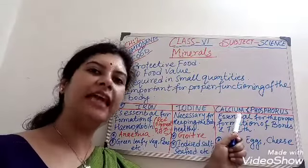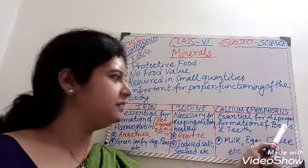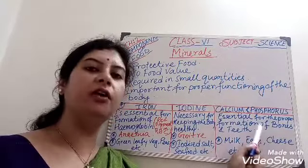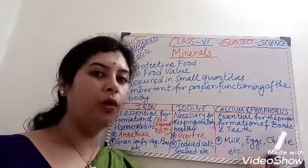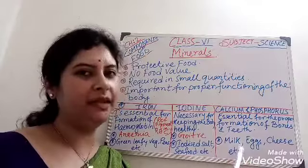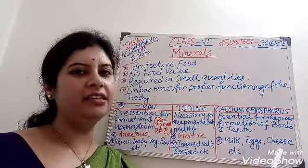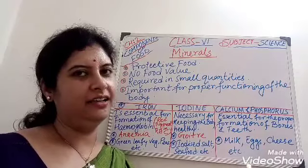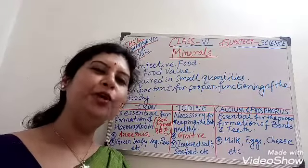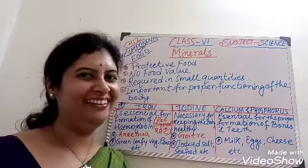Calcium and phosphorus are essential for the formation of bones and teeth. They are present in milk, egg, cheese, etc. So, children, drink at least two glasses of milk every day.